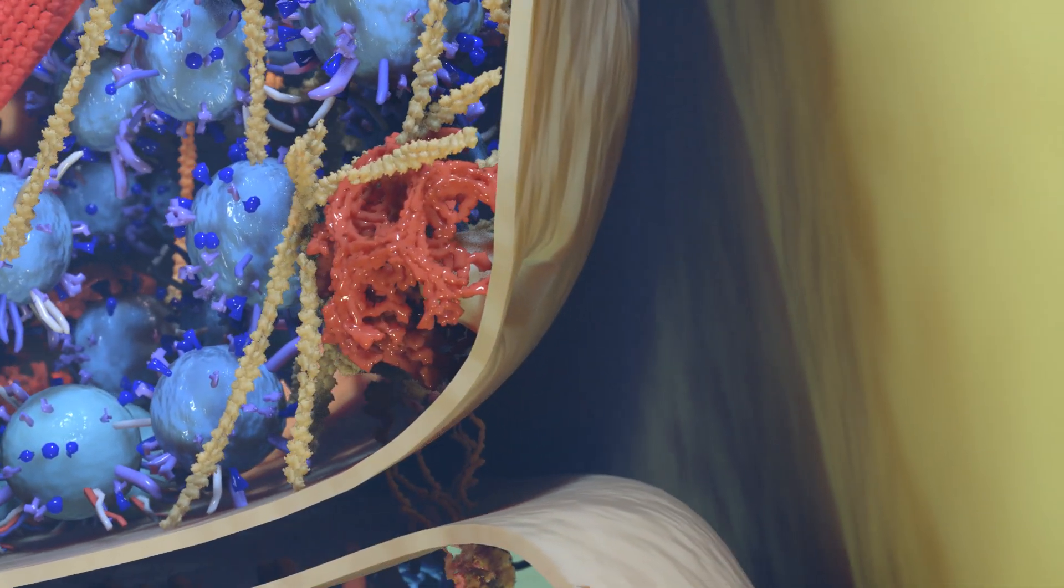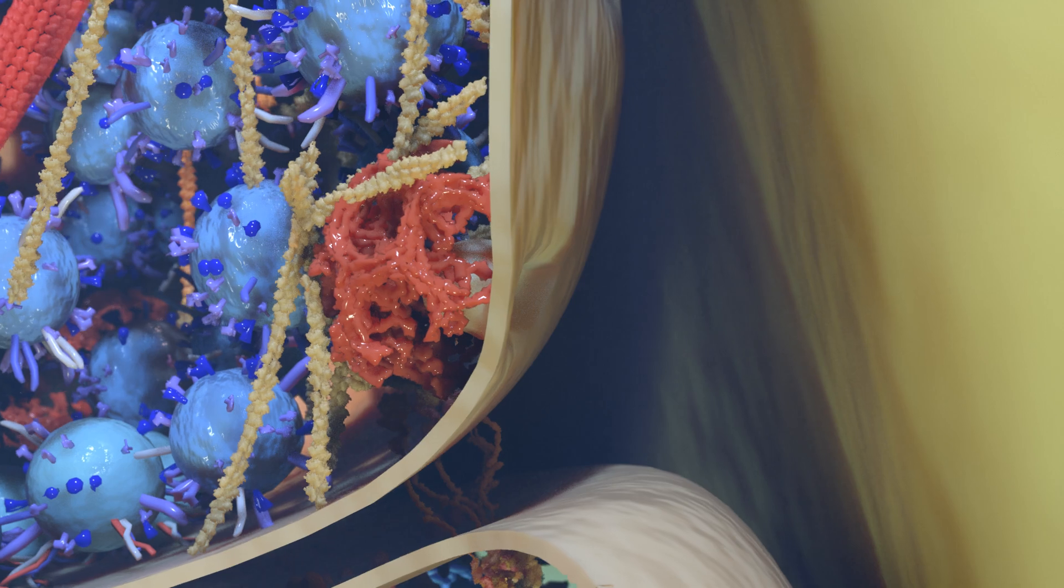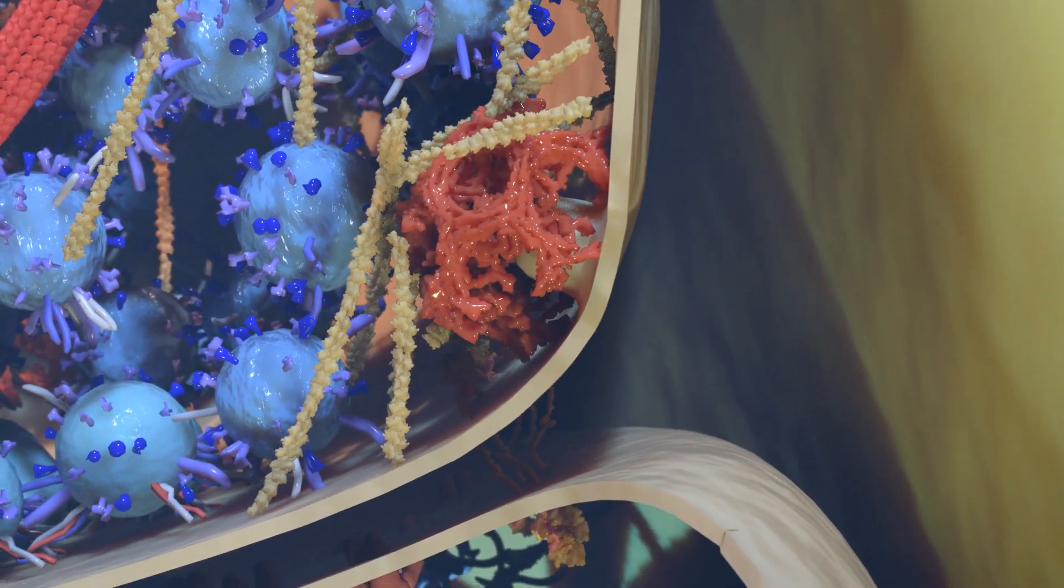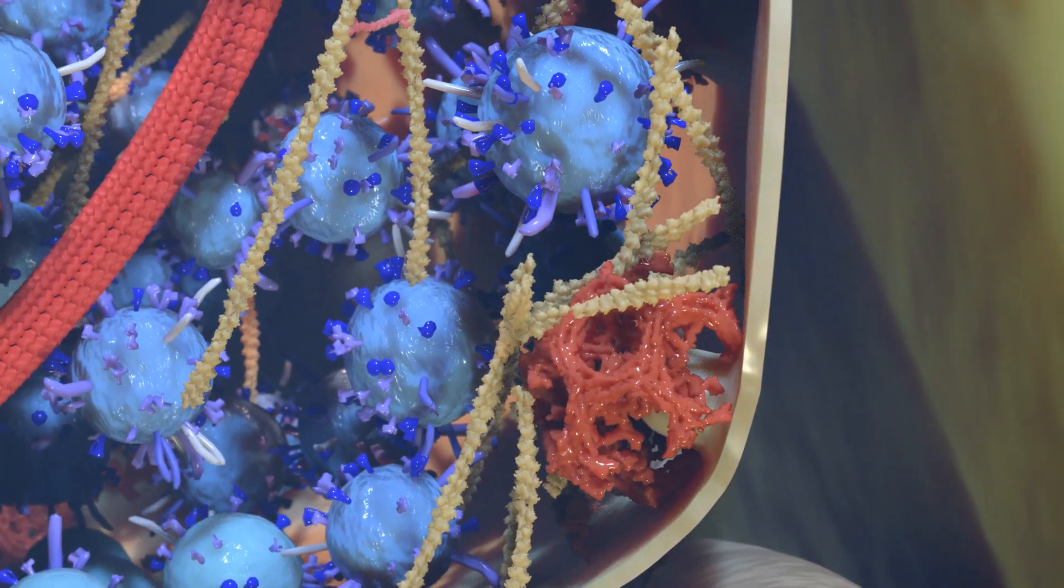To the right, you can see clathrin-coated vesicles budding off. This is where the cell recycles vesicles and their proteins, ensuring a constant supply.